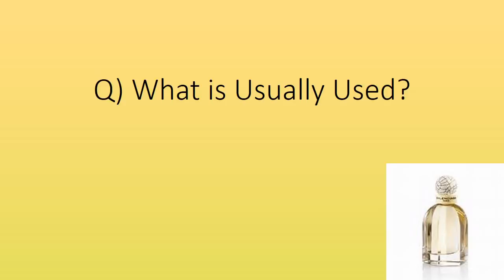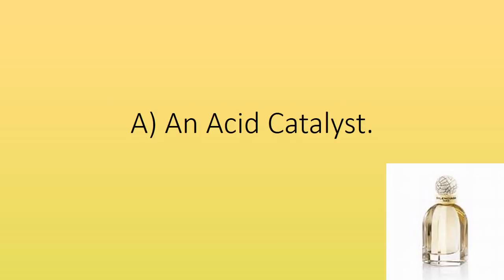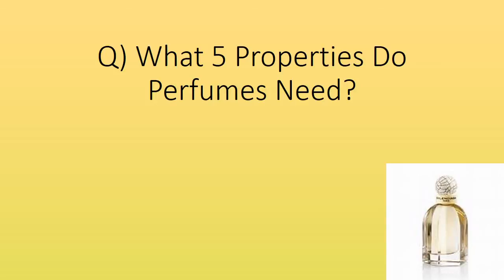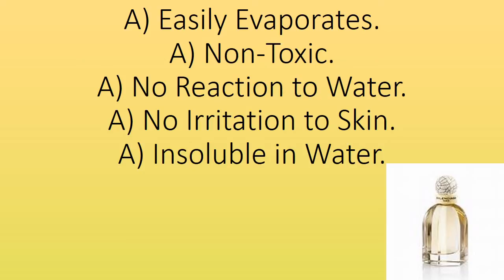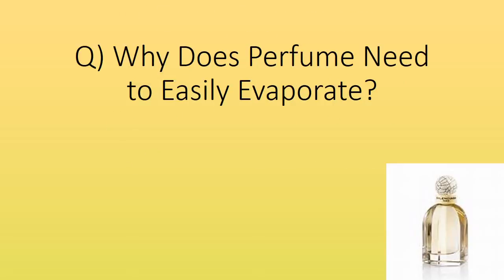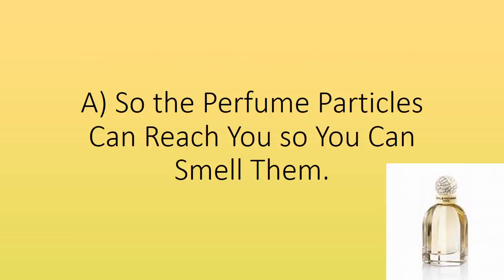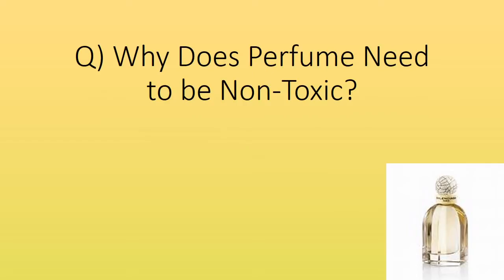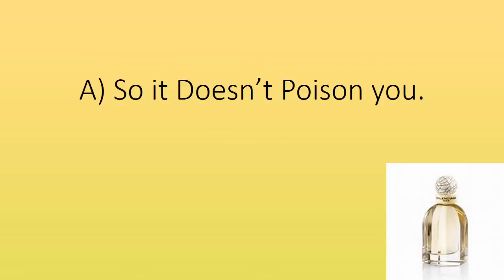What is usually used? An acid catalyst. What five properties do perfumes need? Easily evaporates, non-toxic, no reaction to water, no irritation to skin, and insoluble in water. Why does perfume need to evaporate easily? So the perfume particles can reach you so you can smell them. Why does perfume need to be non-toxic? So it doesn't poison you.